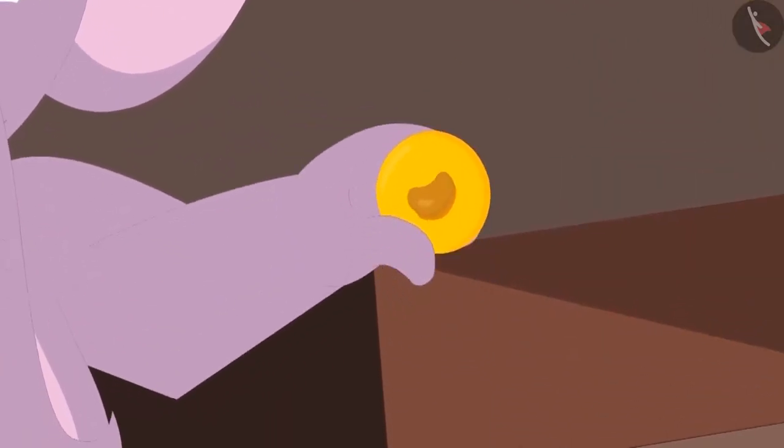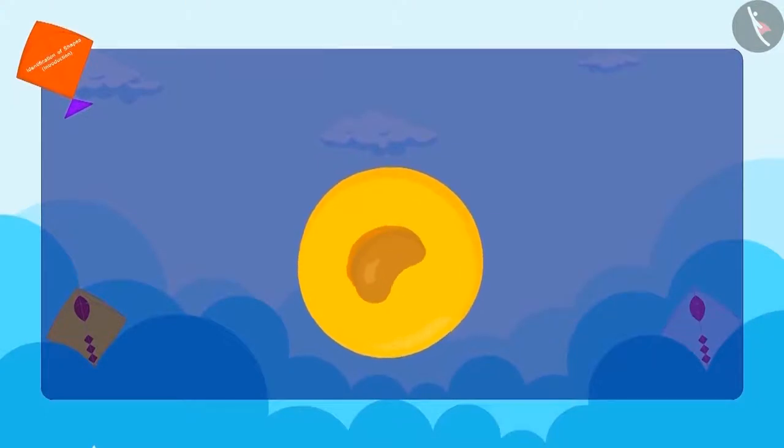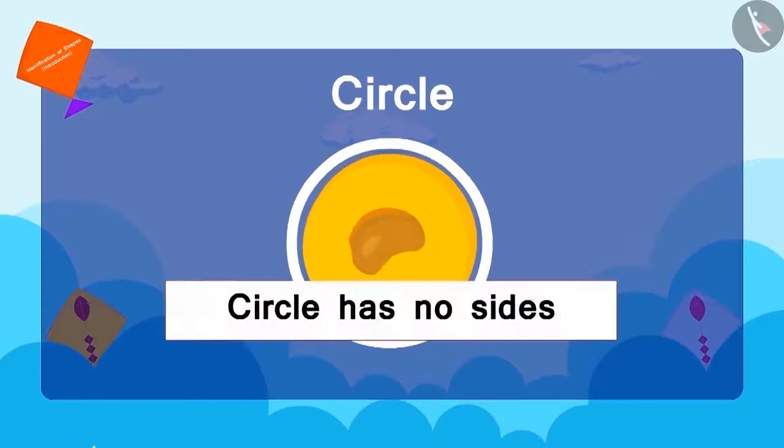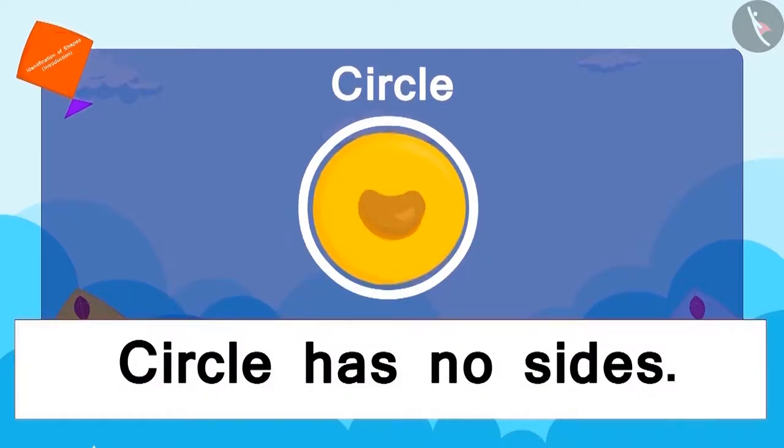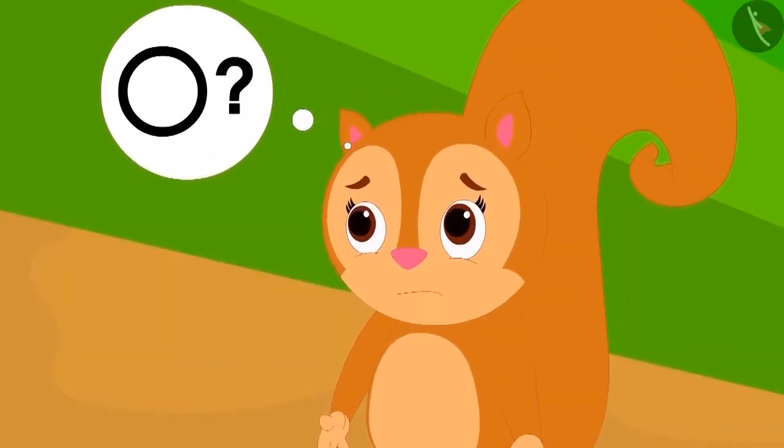Appu shows Chanda this type of Peda. Do you recognize this shape? This is round in shape, which can be called a circle. A circle is formed by only one curved edge and it has no sides. Chanda understood the shape of the circle.